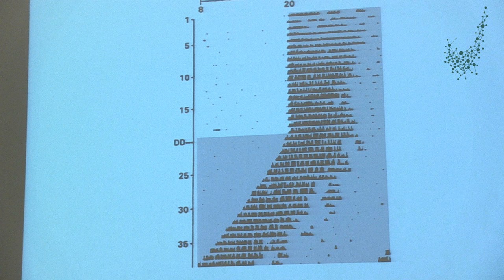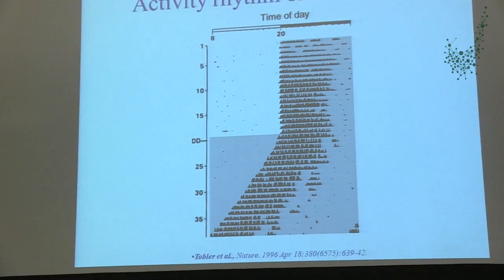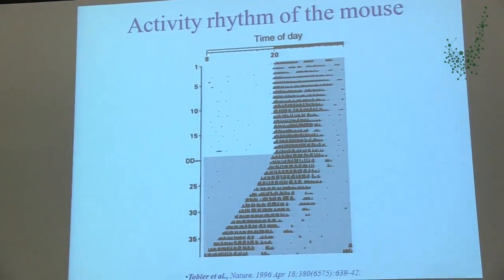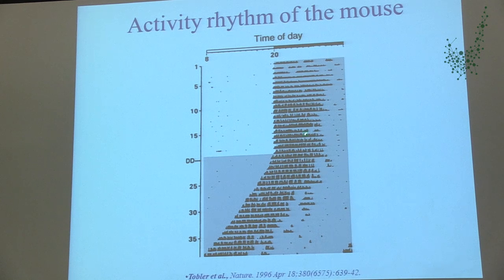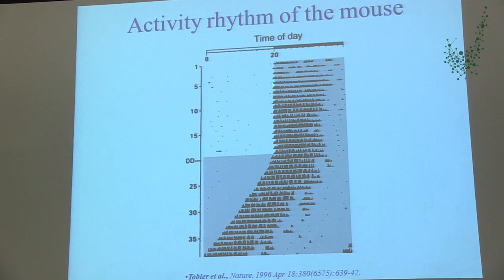Mice are nocturnal, so their behavioral activity is mostly confined to the night. Here is 12 hours of light and 12 hours of darkness, with the days plotted beneath one another — the mouse is mostly active during the night. But if you look carefully, you can see that the mouse starts its activity every day slightly before dark onset. This already indicates that the animal subconsciously knows there is another phase of the cycle about to come.